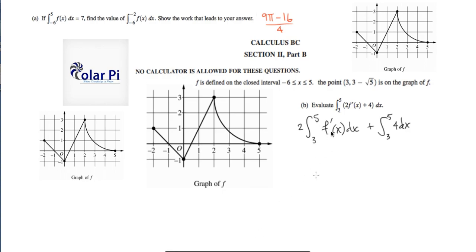The integral of f prime is just f, so we evaluate f from 3 to 5. So that's f of 5 minus f of 3, but we have this 2, so we have 2 times f of 5 minus f of 3. And then we have plus the integral of 4 dx is 4x evaluated from 3 to 5. It's 4 times 5 minus 4 times 3. And if you factor out a 4 here, you get 4 times 5 minus 3, which is 4 times 2, and so 8.